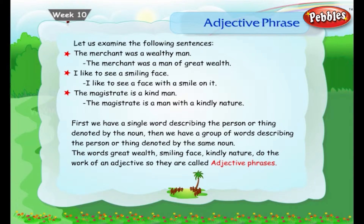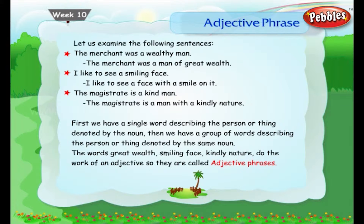Let us examine the following sentences. The merchant was a wealthy man. The merchant was a man of great wealth. 'Of great wealth' here is a phrase. I like to see a smiling face. I like to see a face with a smile on it. The magistrate is a kind man. The magistrate is a man with a kindly nature.